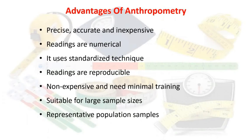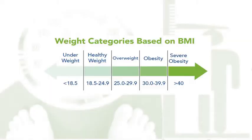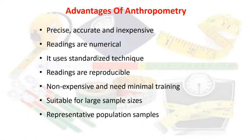The advantages of the anthropometric method are that it is precise, accurate, and inexpensive. Readings are numerical — for example, a BMI of 19, 24, or 25 — so these are all numeric data. It uses a standardized technique, and readings are reproducible: if your BMI is 24.5 today, you can calculate it again tomorrow and there will be no difference. It is non-expensive and needs minimal training.